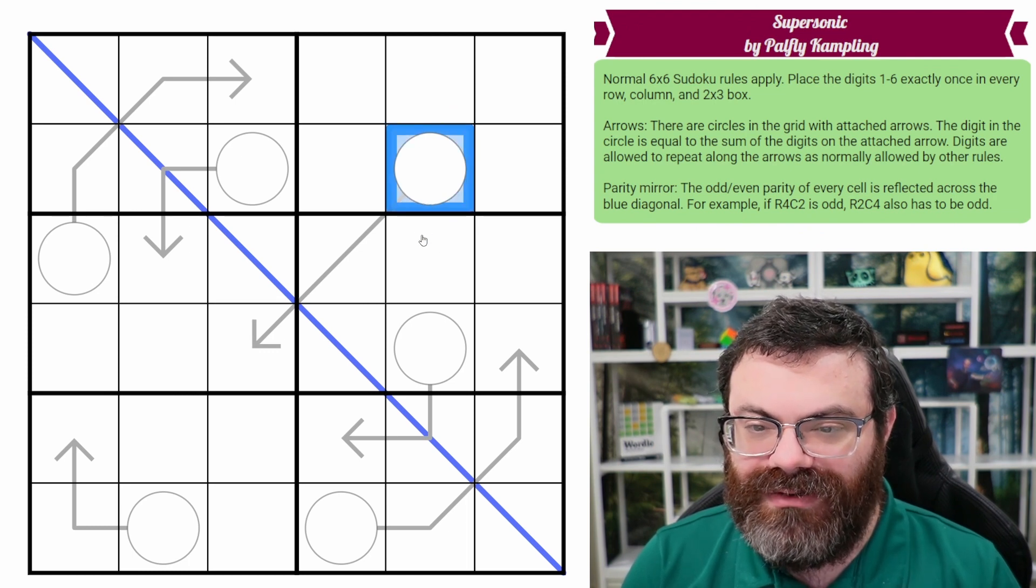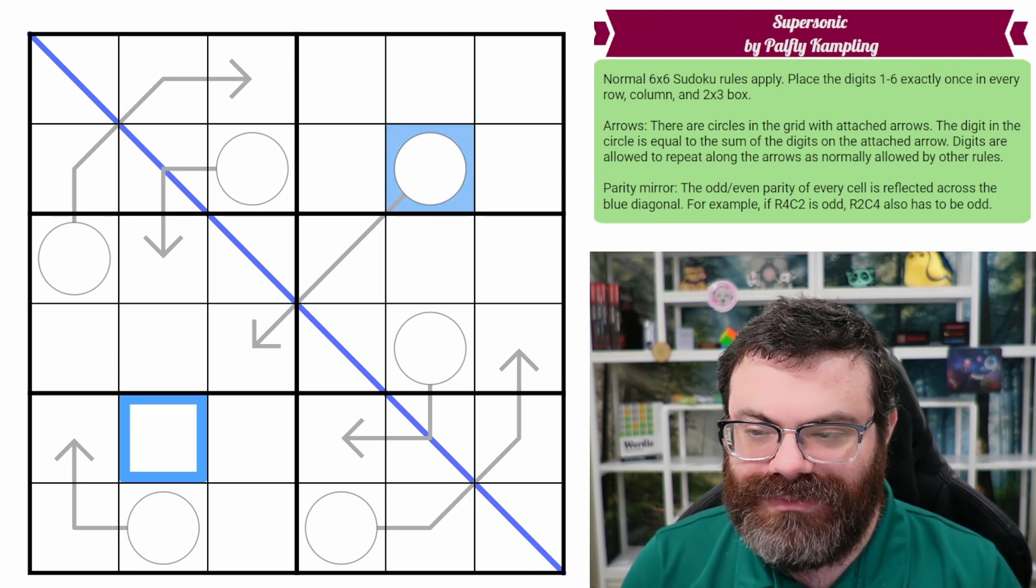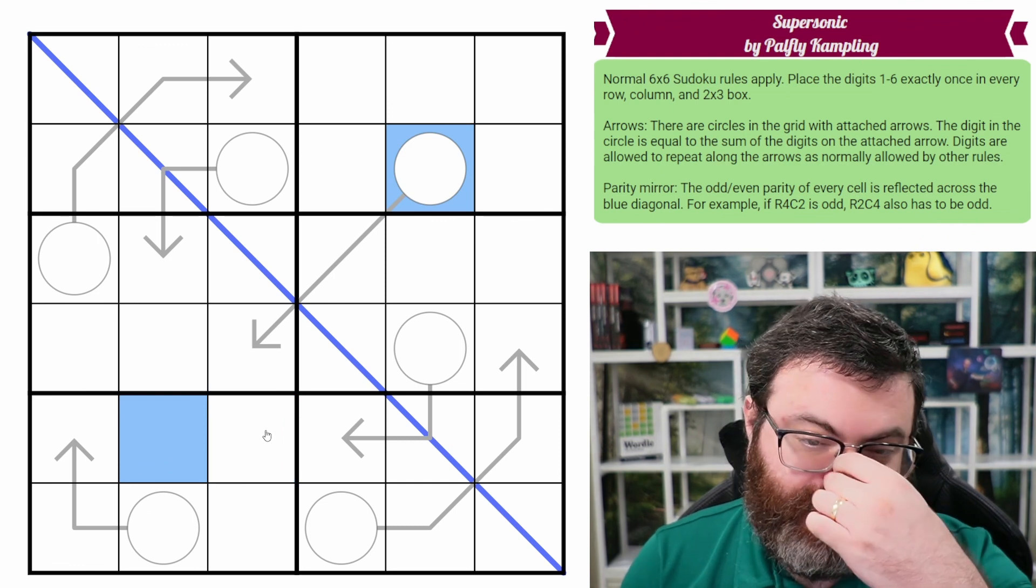You can think of odd numbers as switching the parity when you add an odd number and even numbers preserve the parity. That's how I like to think about it. So these are the same parity because of the parity mirror. We don't know which is which, but that does mean that this is even. So I use blue for even and orange for odd.